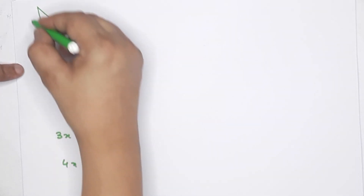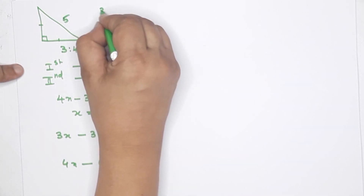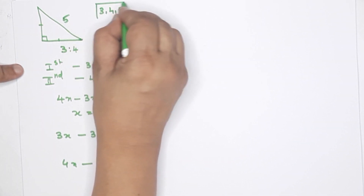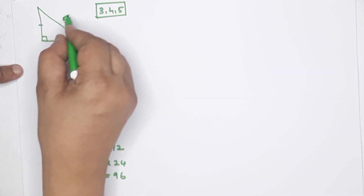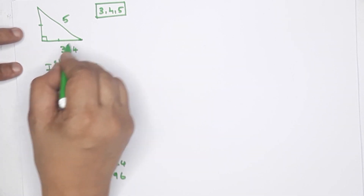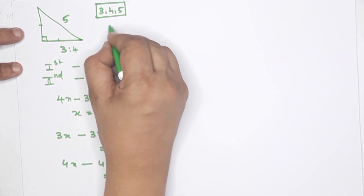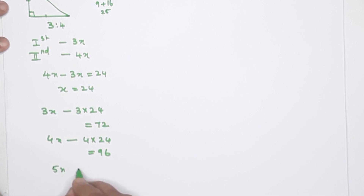Next, the hypotenuse: 3 is to 4 is to 5 — a Pythagorean triplet ratio. 3 squared is 9, 4 squared is 16, total is 25, root 25 is 5. So hypotenuse is 5x. 5x equals 5 into 24, that is equal to 120 meters.